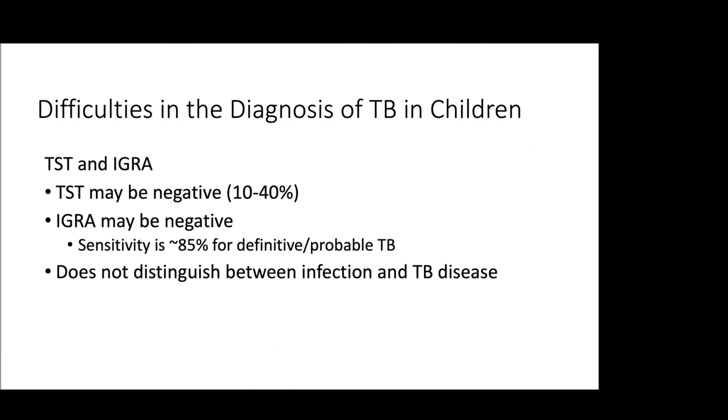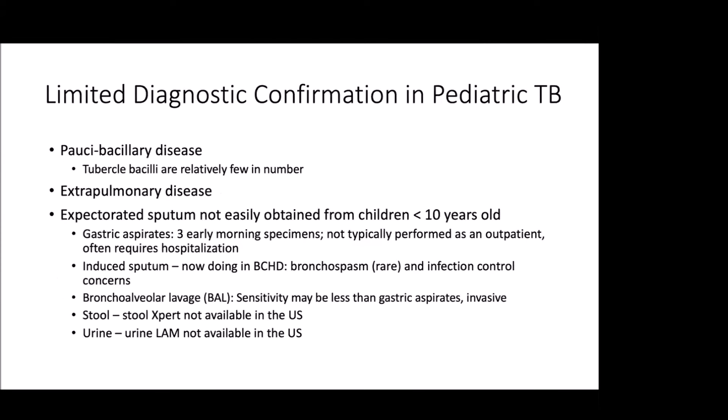TSTs and IGRAs have their flaws. A TST could be negative 10 to 40% of the time. IGRAs can be negative up to 15% of the time, with a sensitivity of only about 85%. These tests don't distinguish between infection and TB disease — a kid could have LTBI and also have a community-acquired pneumonia. Not everything that is TST or IGRA positive is TB disease.